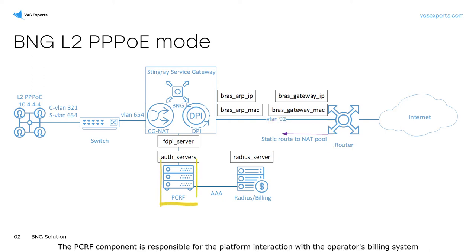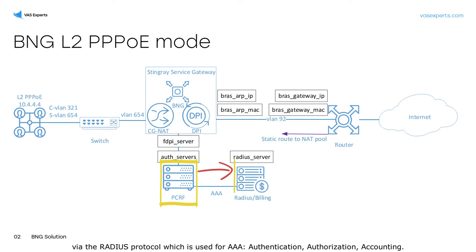The PCRF component is responsible for the platform interaction with the operator's billing system via the RADIUS protocol, which is used for AAA — Authentication, Authorization, and Accounting.